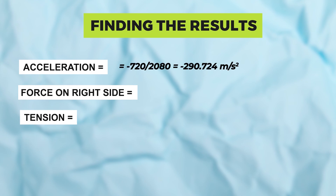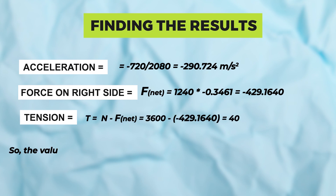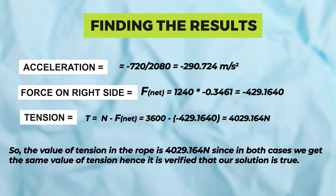Acceleration equals minus 720 over 2080, giving minus 0.3461 m/s². Force on the right side: F_net equals 1240 times minus 0.3461, so total force on the right side is minus 429.164 N. Tension T equals N minus F_net, where N is 3600 and F_net is minus 429.164, so total tension is 4029.164 N. Since in both cases we get the same value of tension, it is verified that our solution is correct.